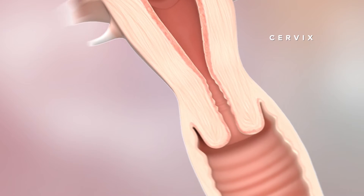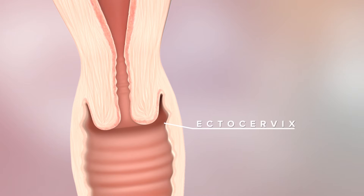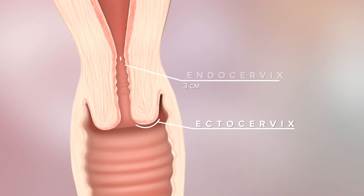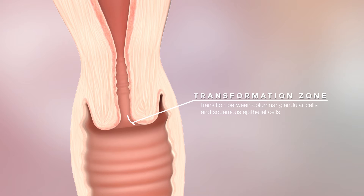The vagina opens to the outermost section of the cervix, the ectocervix, while the 3 cm structure connecting the vagina to the uterus is the endocervix. The transformation zone where the endocervix joins the ectocervix is the transition between the columnar, glandular cells of the endocervical canal and the squamous epithelial cells that line the ectocervix.